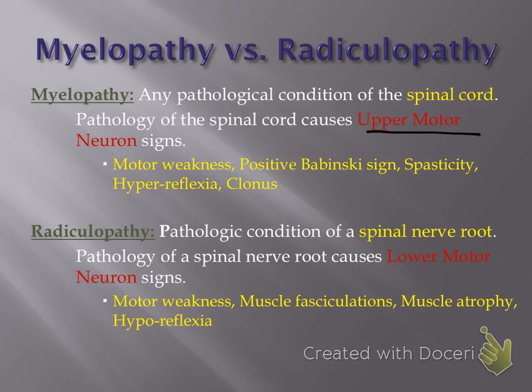The upper motor neurons are found within the central nervous system — the brain or spinal cord — whereas the lower motor neurons are the neurons that extend out of the spinal column in the peripheral nerves.